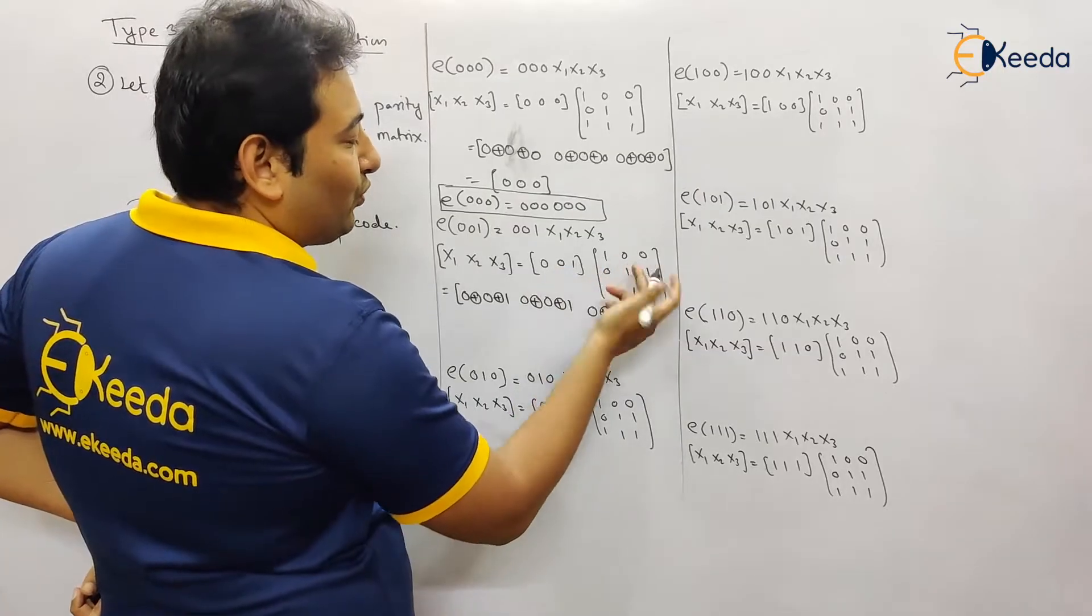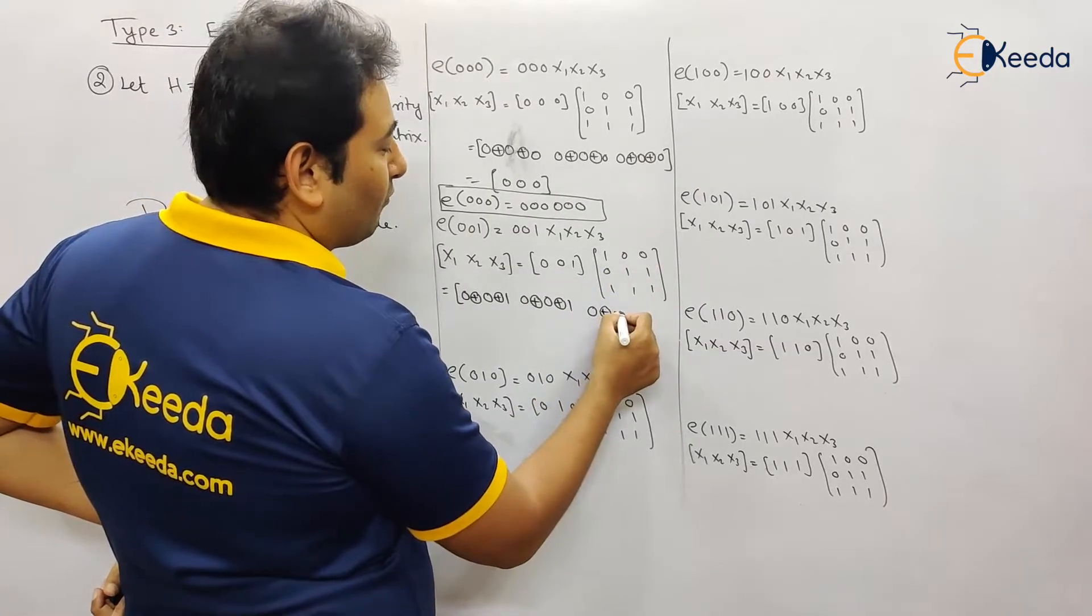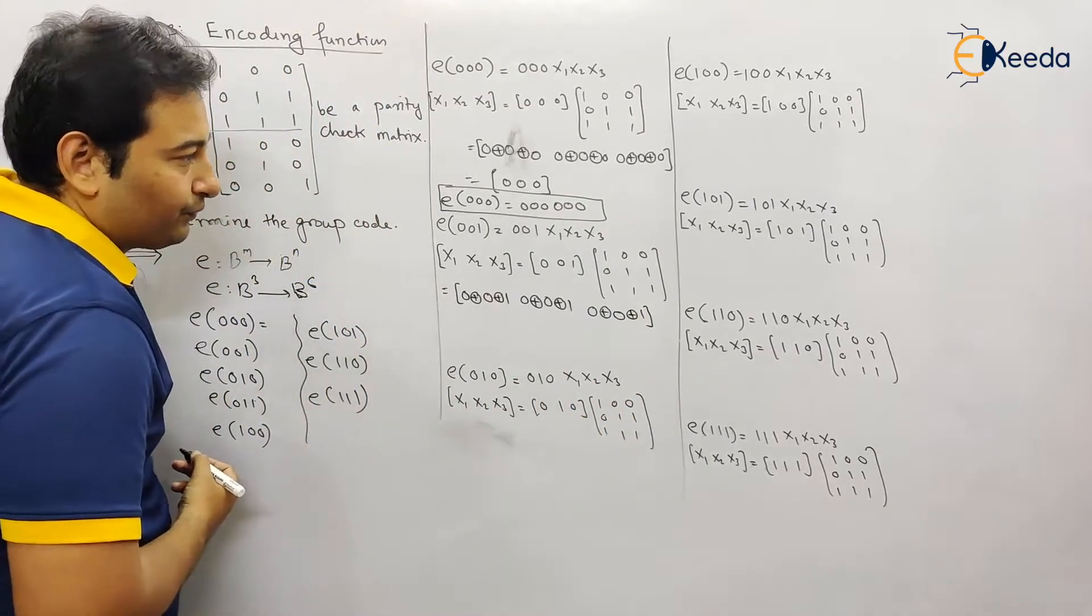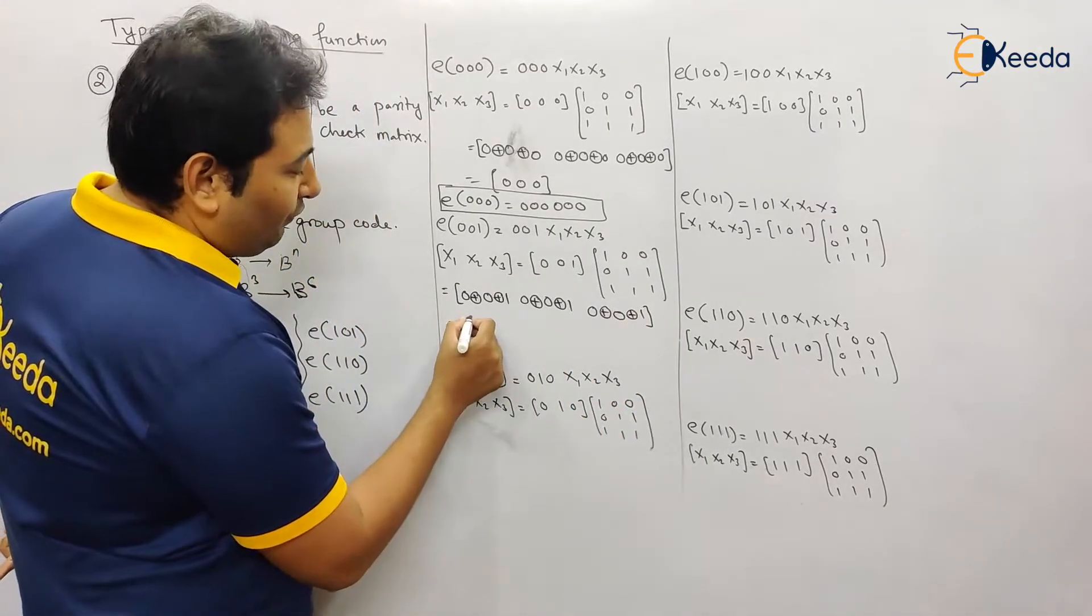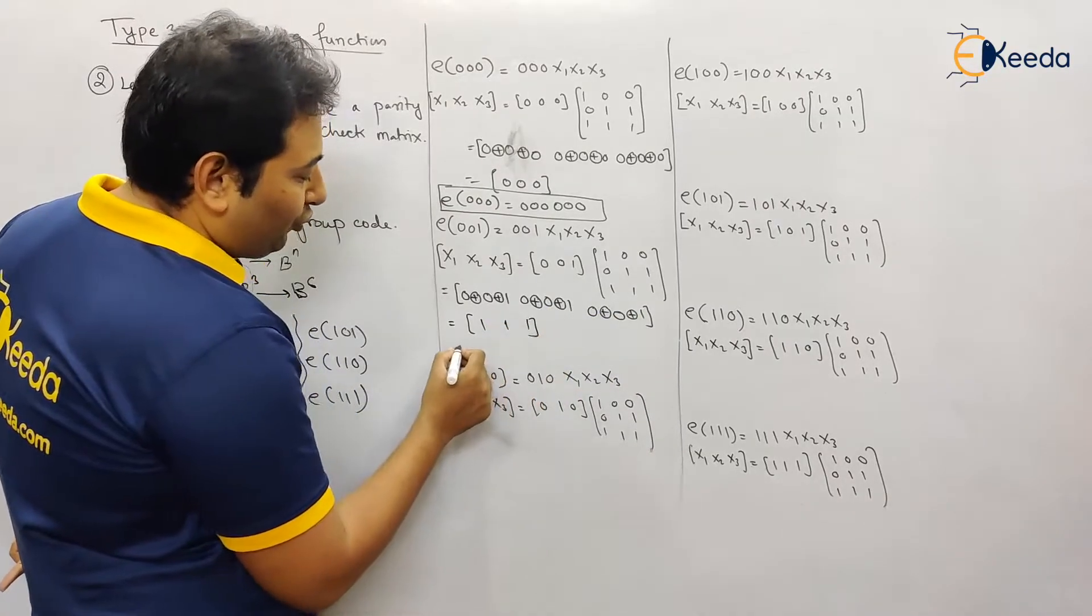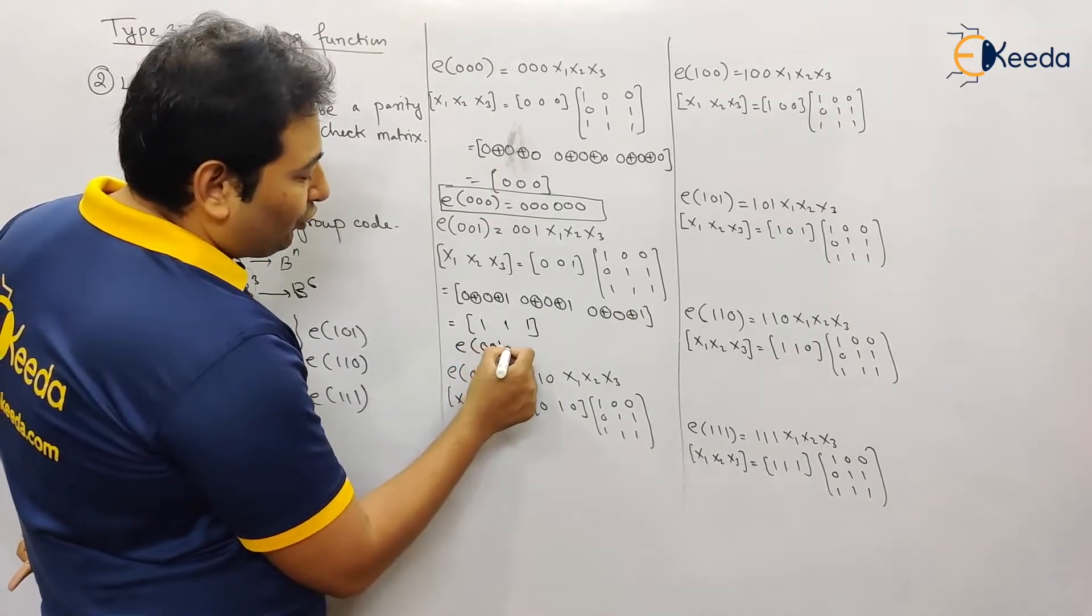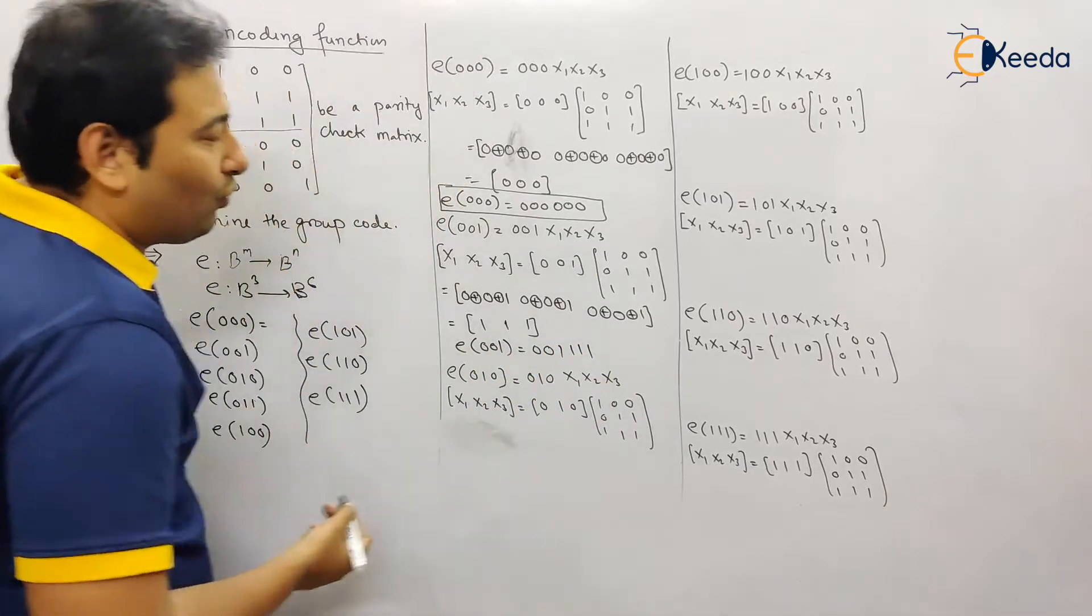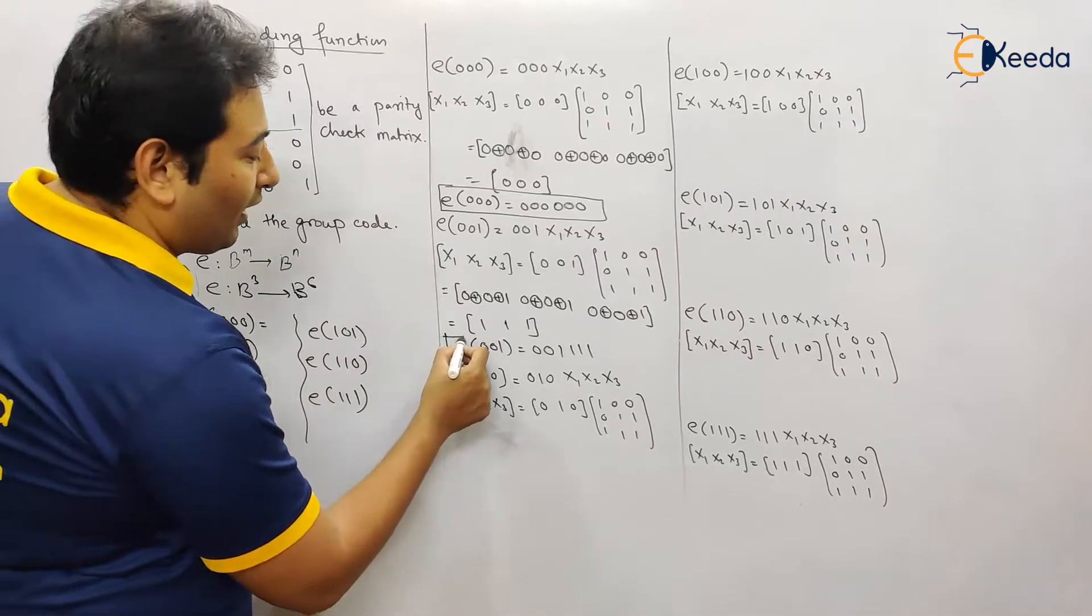So 0 into 0 is 0, 0 into 1 is 0, 1 into 1 is 1. That will be equal to: this is 1, this is 1, this is 1, and this is 1. So in short, the code for e 0 0 1 is 0 0 1 and triple 1. So this is the code for e 0 0 1.